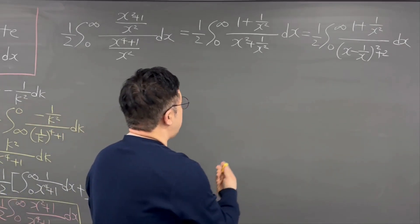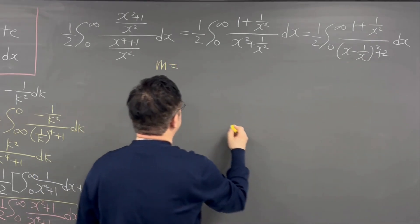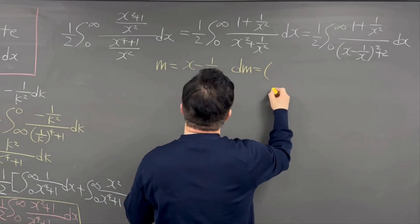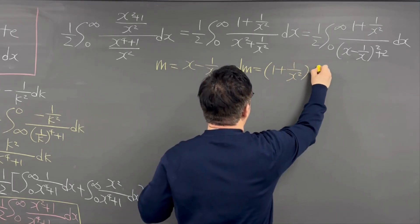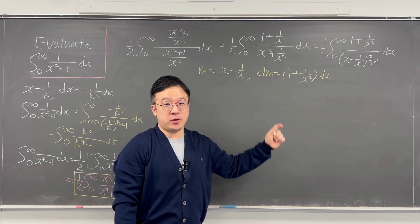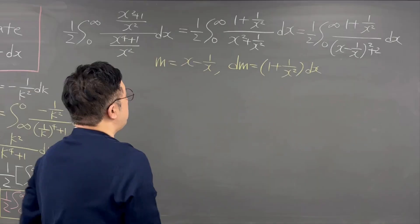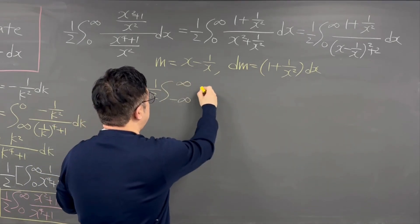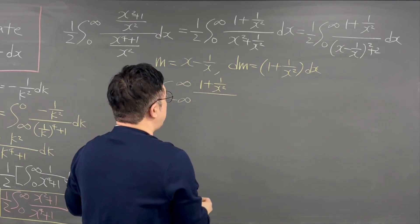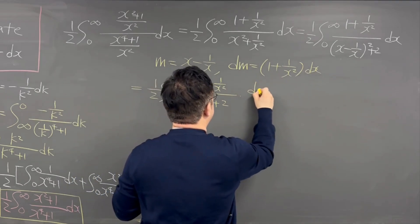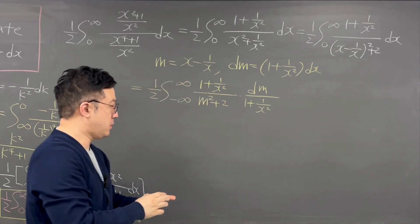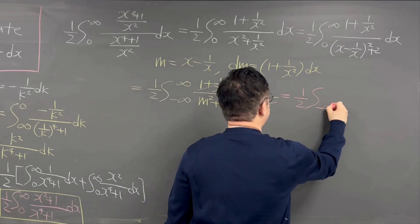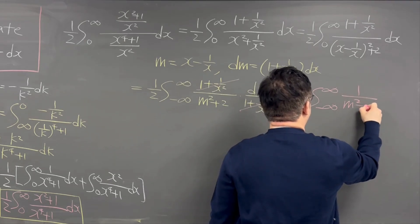Then we can make another substitution. Let m equal x minus 1 over x inside the parentheses. Then dm equals 1 plus 1 over x squared, dx. We're doing this because I want to use arctangent at the end. So rewriting the integral using this substitution, the integral is now 1 over 2 times the integral from negative infinity to infinity of 1 plus 1 over x squared, all over m squared plus 2, times dm over 1 plus 1 over x squared. We can cancel the 1 plus 1 over x squared completely, giving us 1 over 2 times the integral from negative infinity to infinity of 1 over m squared plus 2, dm.